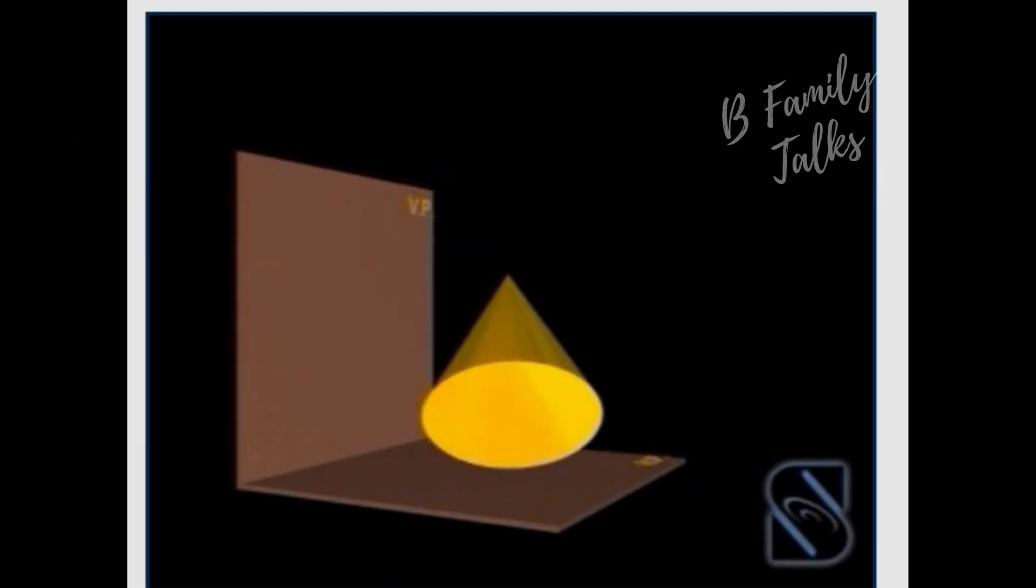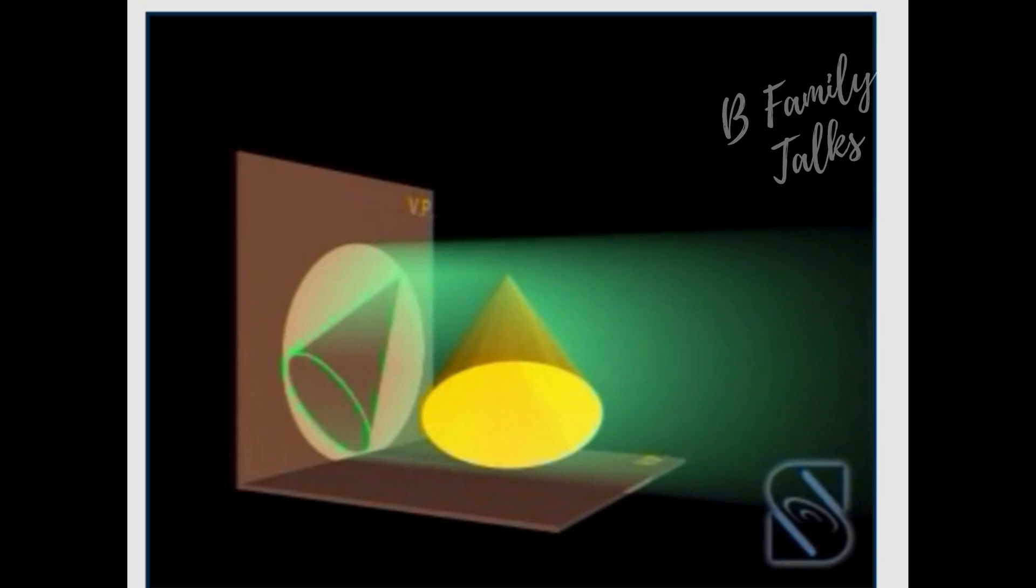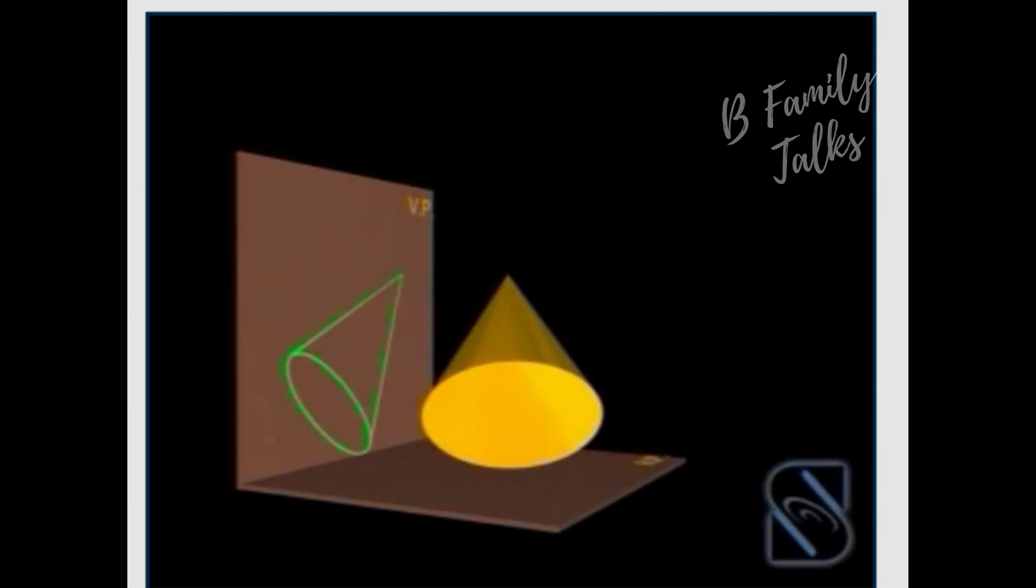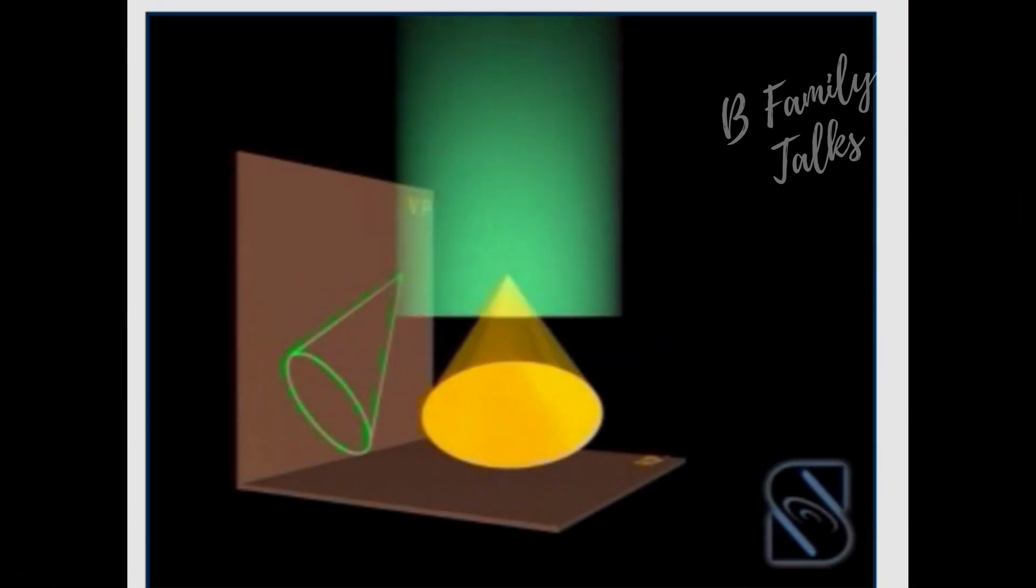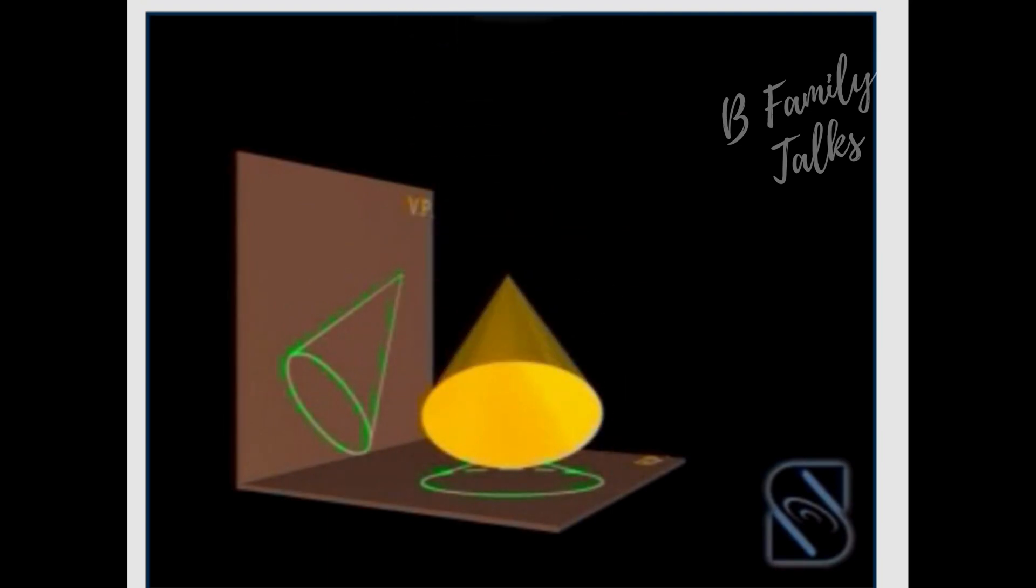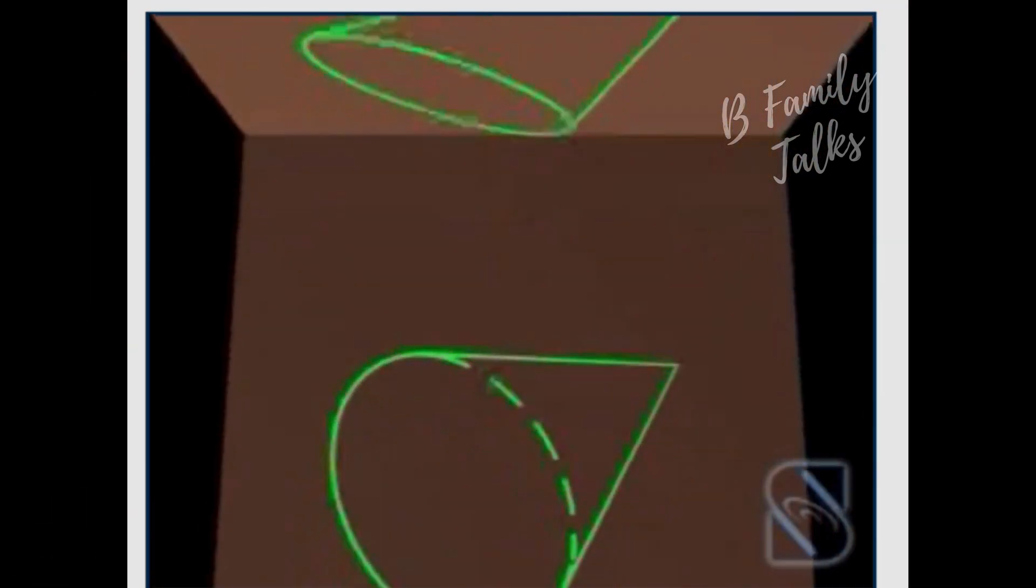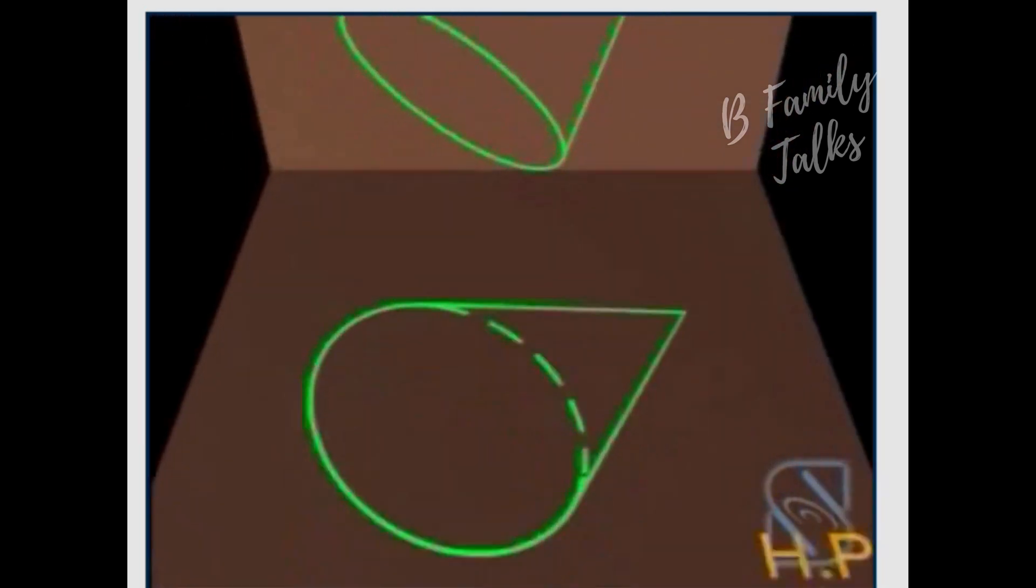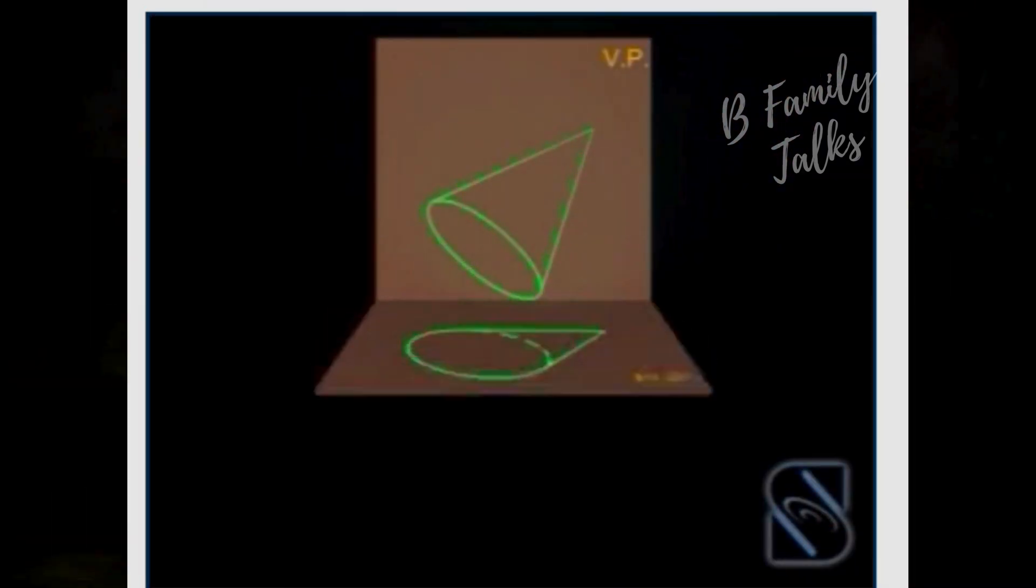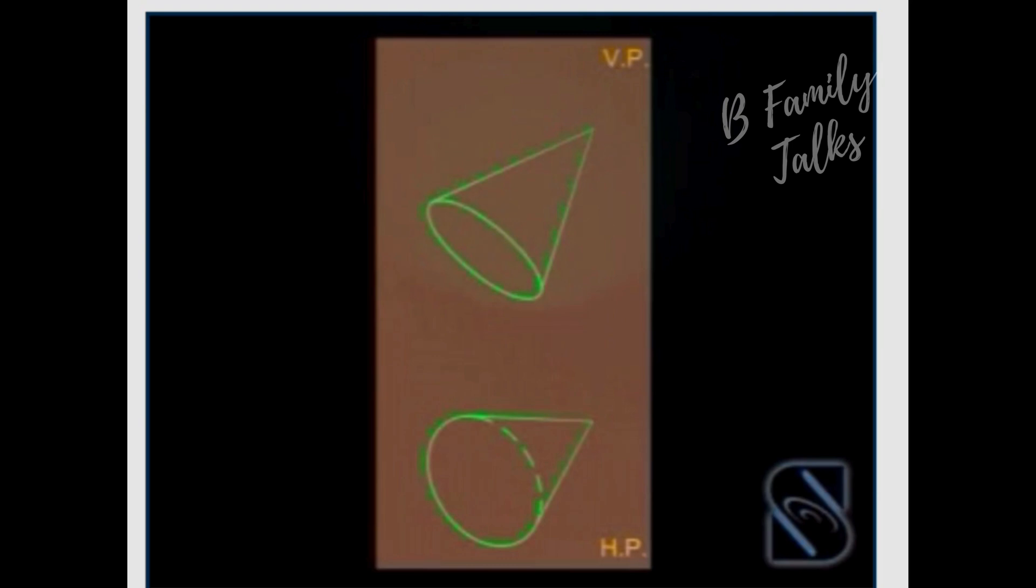Position the solid in the first quadrant. Look at the solid from the front to obtain the front view as shown in the figure. Look at the solid from the top to obtain the top view as shown in the figure. Rotate the horizontal plane 90 degrees clockwise to get the projection pins.